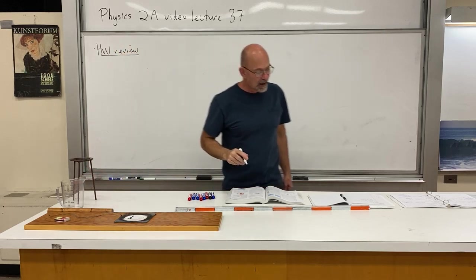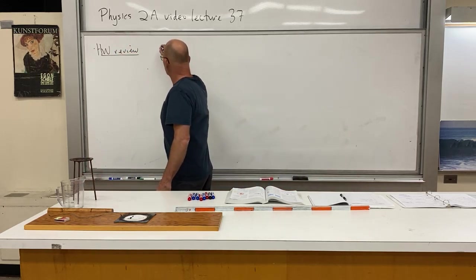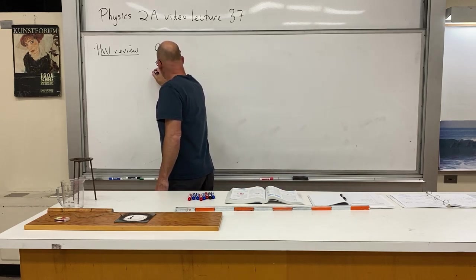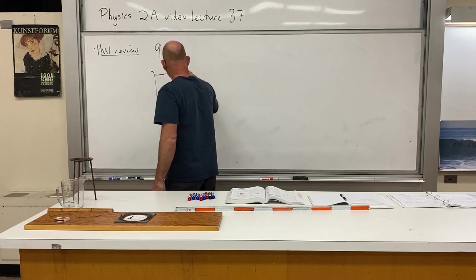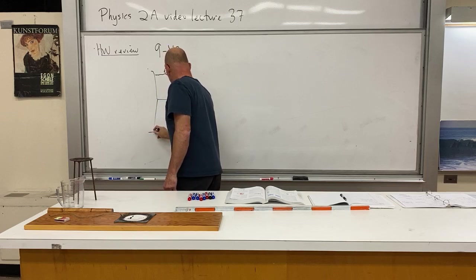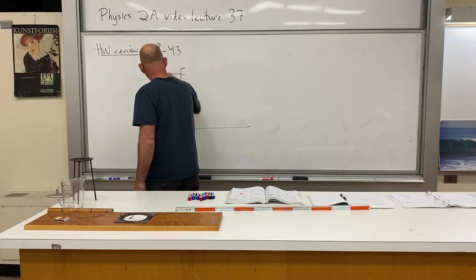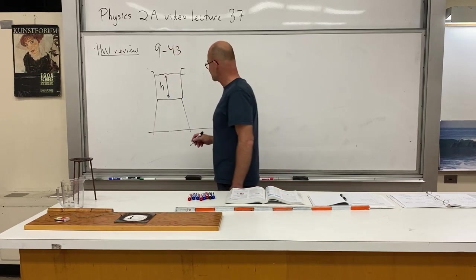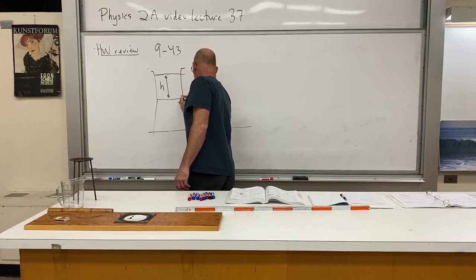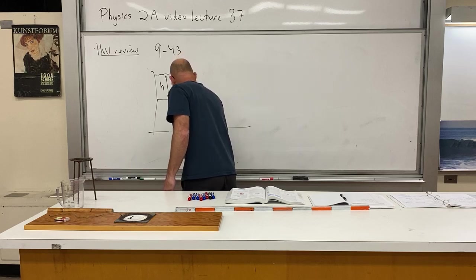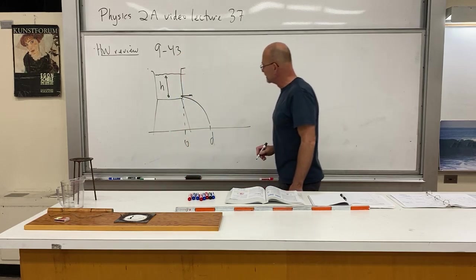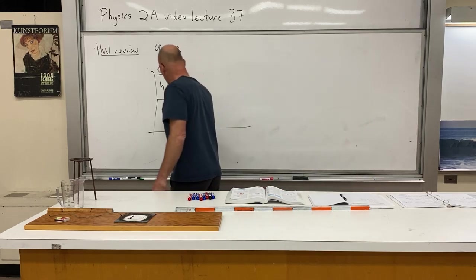That is Chapter 9, Problem 43 — a Bernoulli's principle type of problem. We've got a water tank on a pedestal. The height of the water tank is h, and we'll call this distance here d. This thing springs a leak, and water shoots out, landing a distance d from the base.